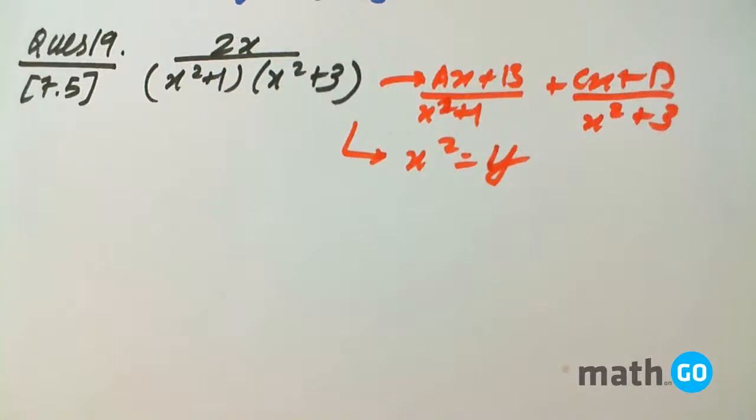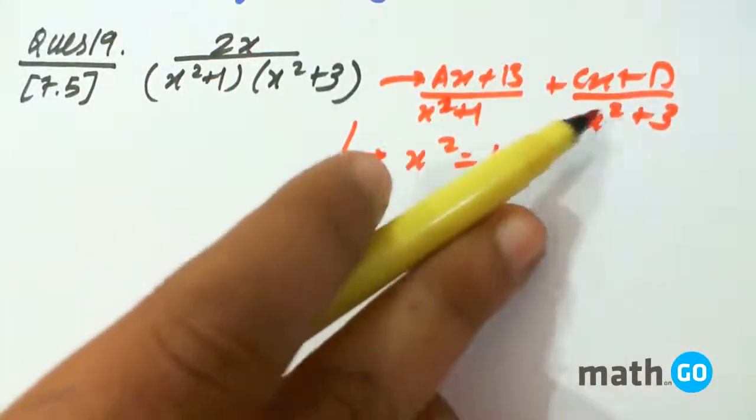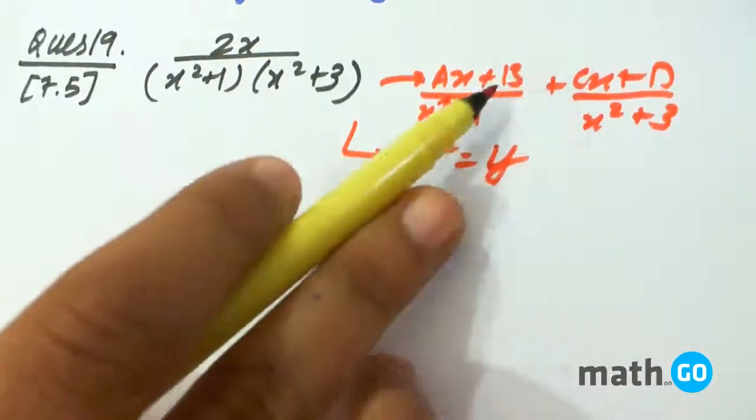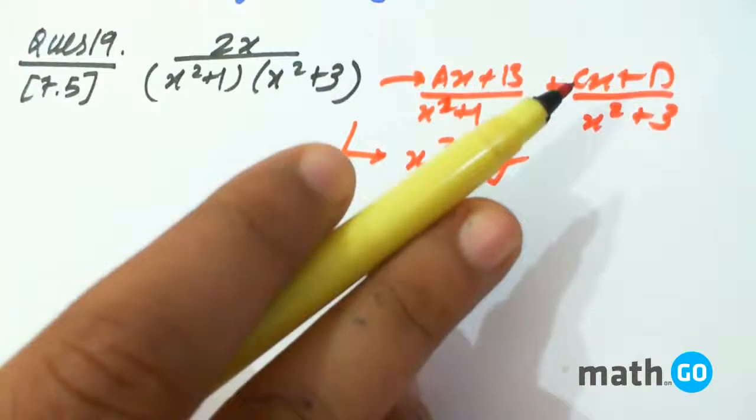Exercise 7.5 question number 19 says 2x upon x square plus 1 into x square plus 3. One approach is that we can convert it into ax plus b upon x square plus 1 plus cx plus d upon x square plus 3. But this has four variables and will become very lengthy. It will not be easy.